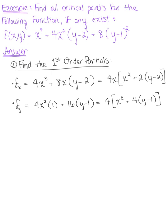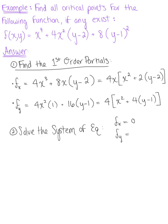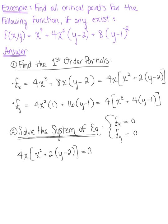We've found our first order partial derivatives with respect to x and with respect to y. Now we're ready to solve the system of equations created by setting both partials equal to zero. We set the partial derivative with respect to x equal to zero, as well as the partial derivative with respect to y equal to zero.